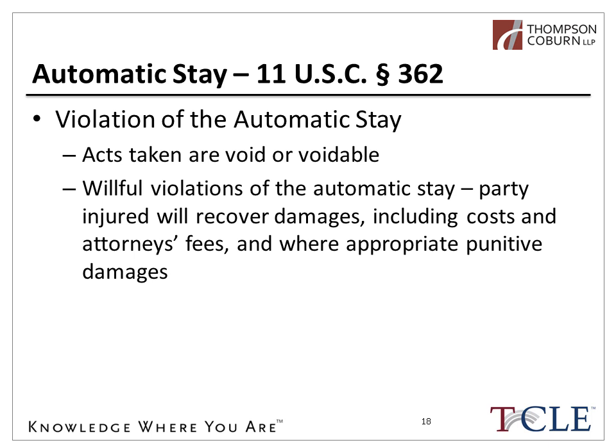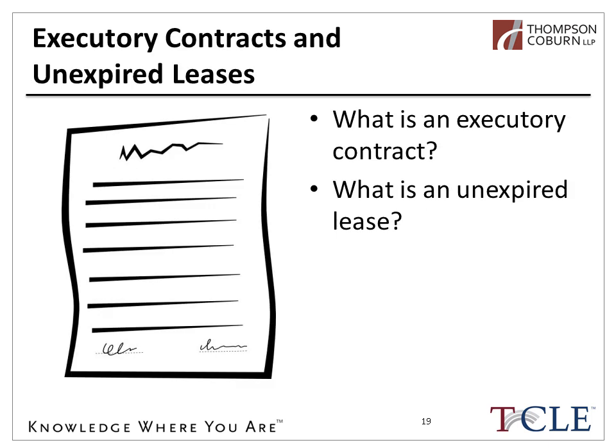We're going to switch gears and take a look at another unique attribute of bankruptcy: how it allows the debtor to treat its pre-bankruptcy agreements. Bankruptcy offers the debtor the opportunity to cherry-pick among its agreements. By following certain rules set forth in the bankruptcy code, the debtor can retain or assume an agreement even though at the time of the bankruptcy filing the agreement may have been in default and could have been terminated under state law. The debtor might also be able to assign its rights under an agreement, even if that agreement includes an anti-assignment provision. Alternatively, the debtor might also shed or reject its pre-bankruptcy agreements without having to pay possibly the full amount of damages due outside of bankruptcy court.